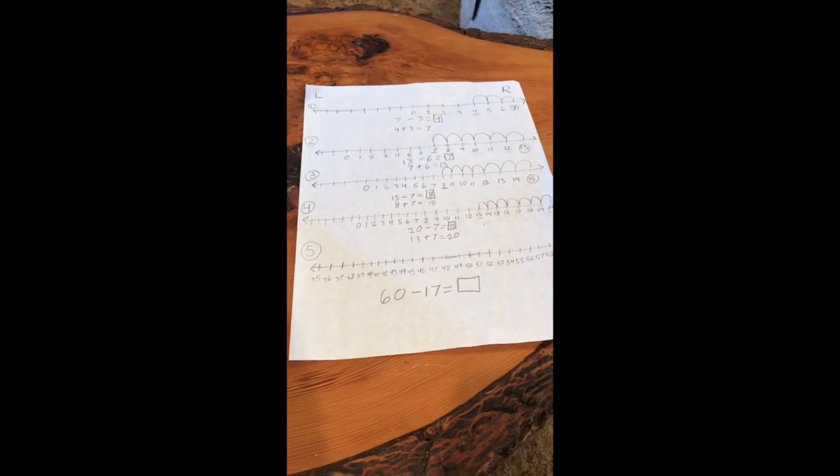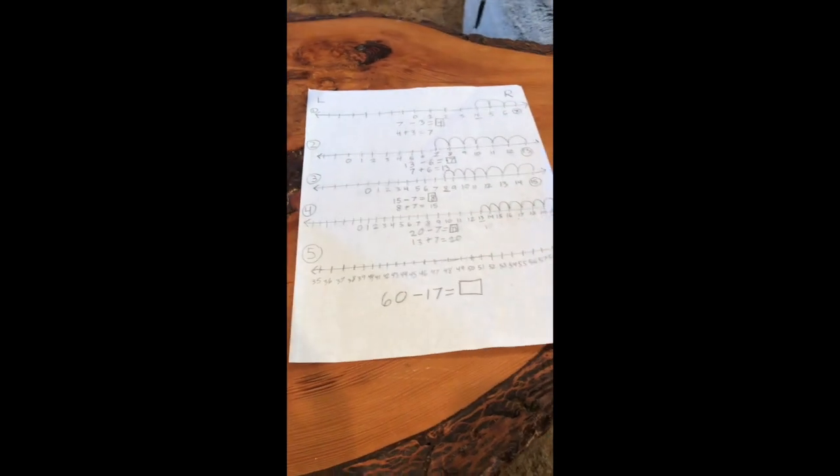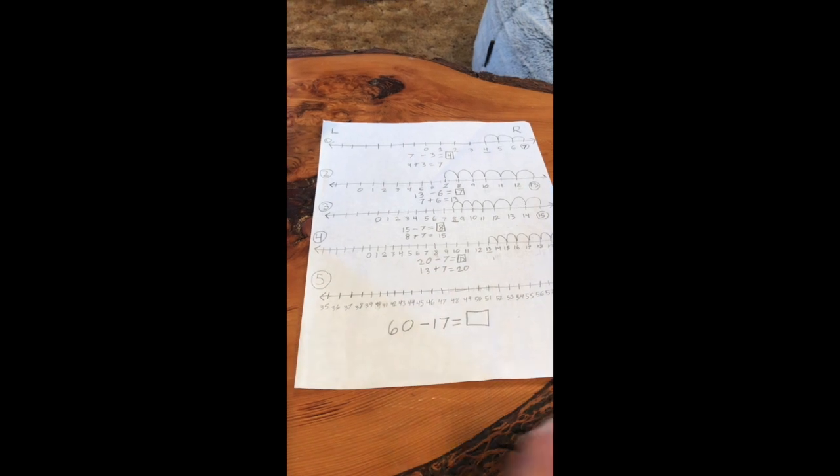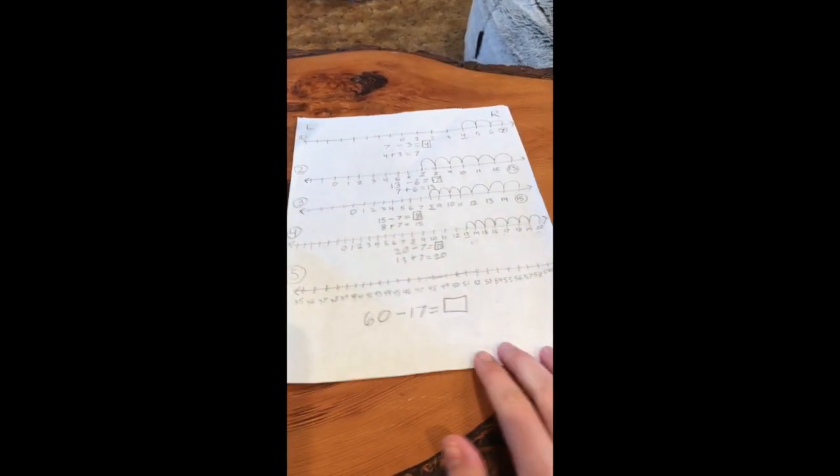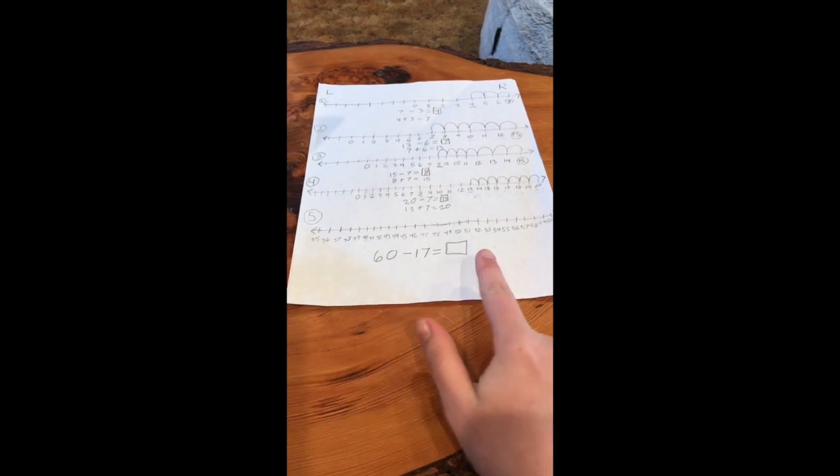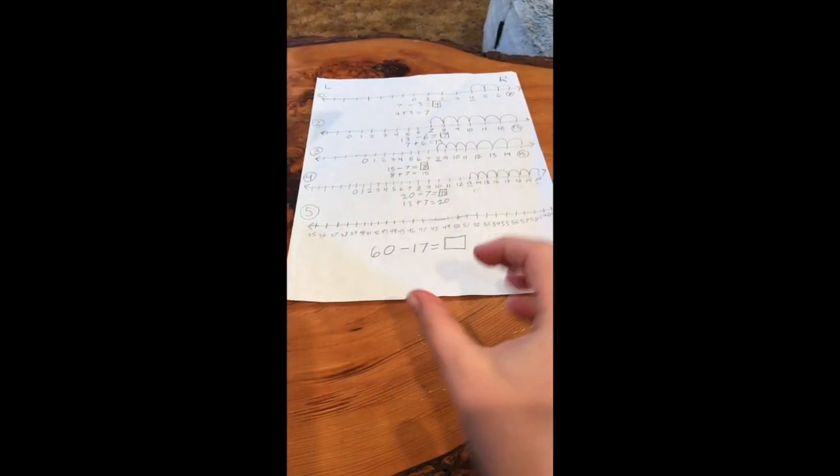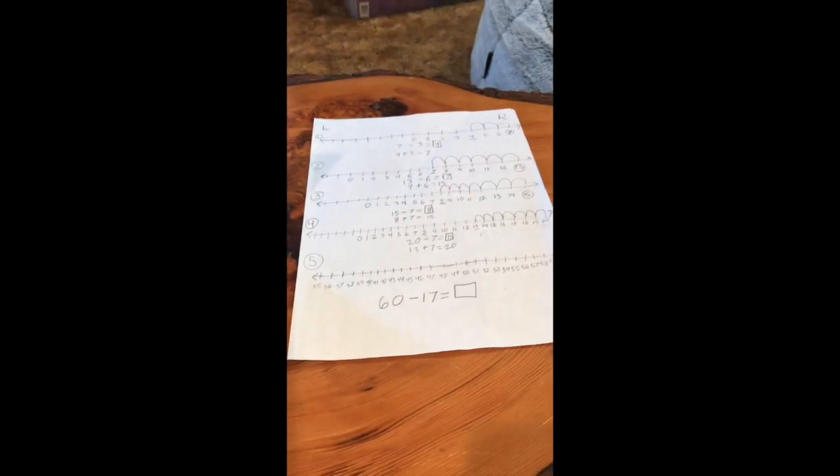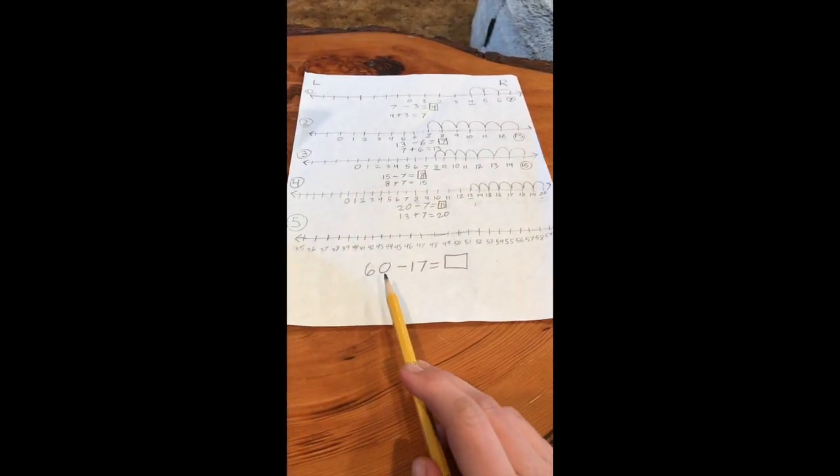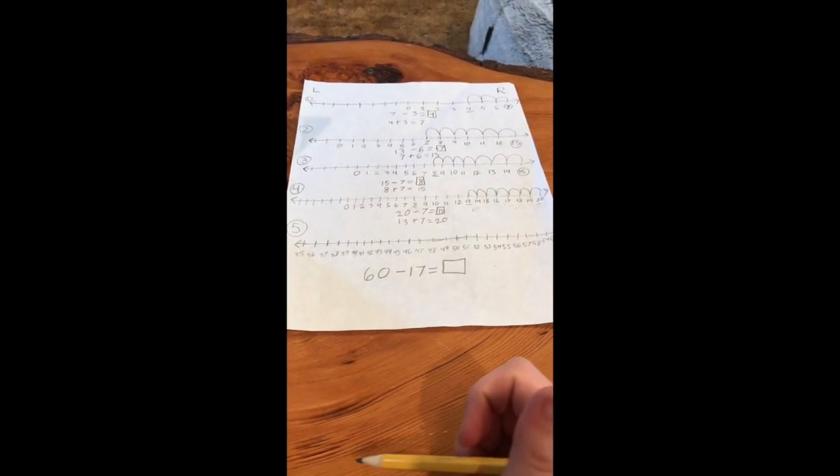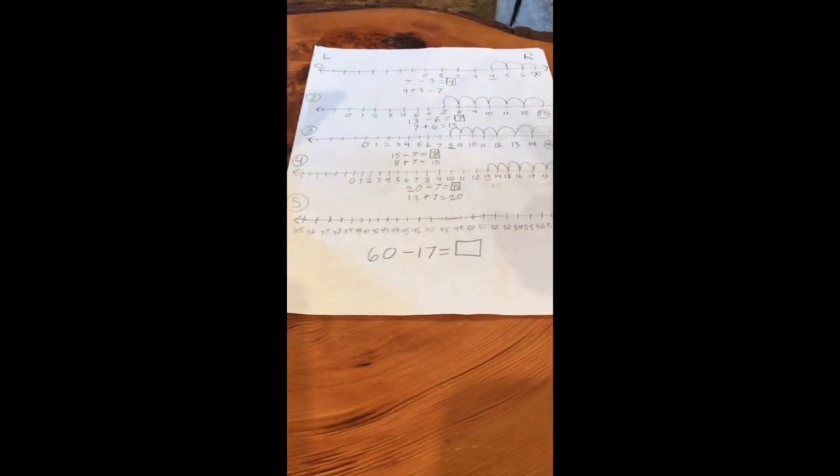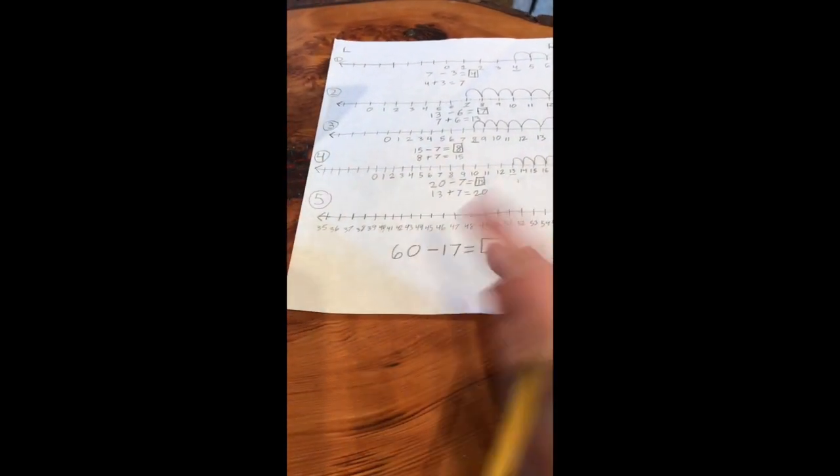This was our work from last week. Remember we're subtracting so we start on the right. I made my number line and I put too many lines so my numbers are really close together. But we start on 60 because we're subtracting, taking away 17. So we're gonna go backwards on our number line starting on 60 and we're gonna make 17 hops.